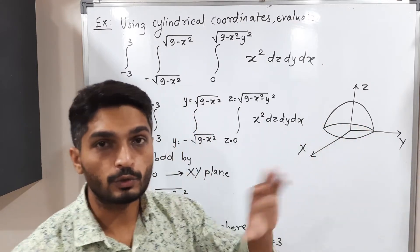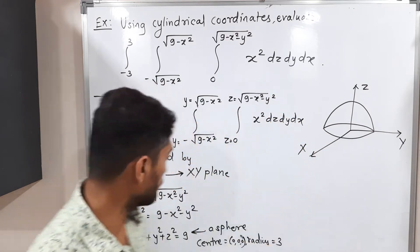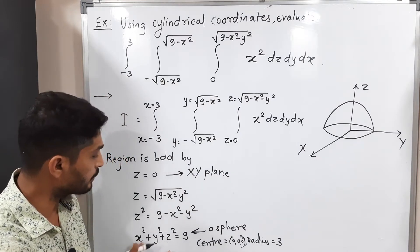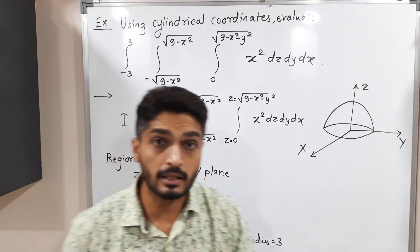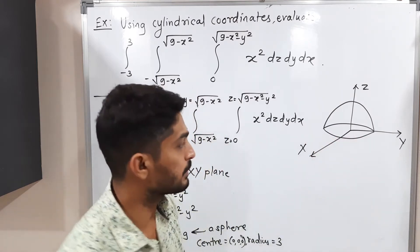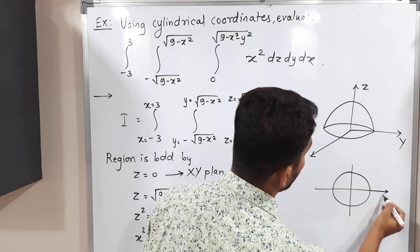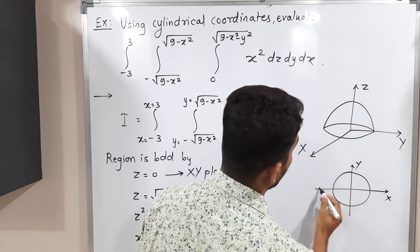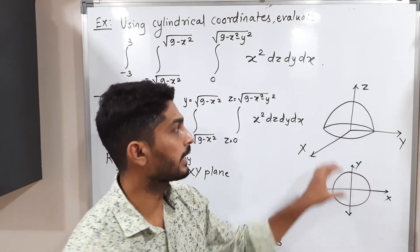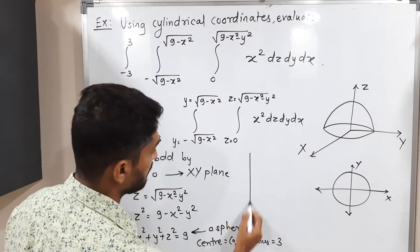At the bottom of the sphere, if we put z = 0, we get x² + y² = 9 — a circle with center (0,0) and radius 3. So in the xy-plane we have a circle, and in 3D we have a hemisphere.